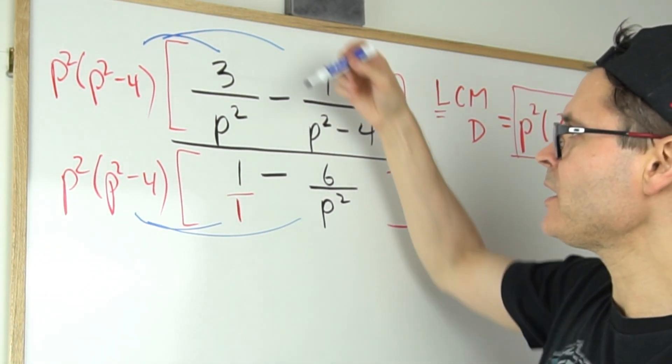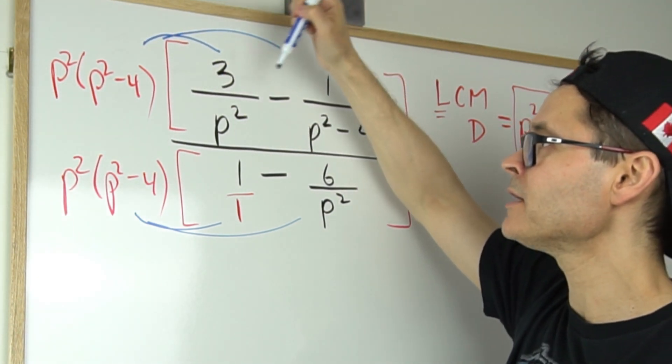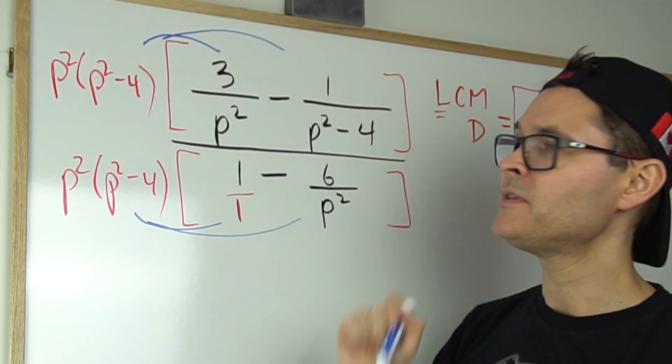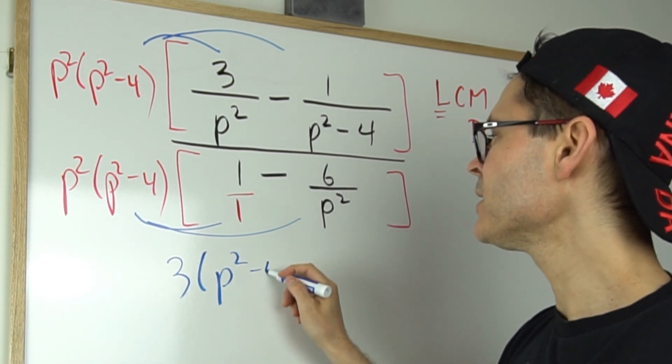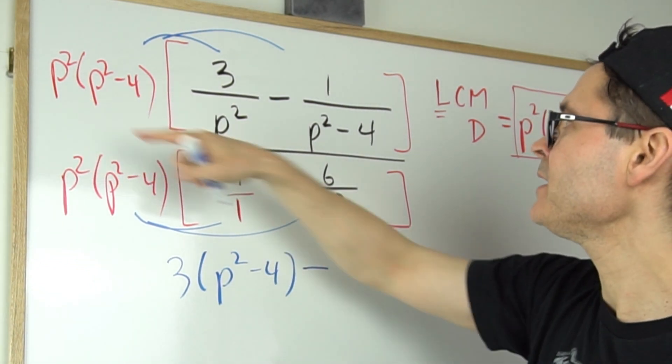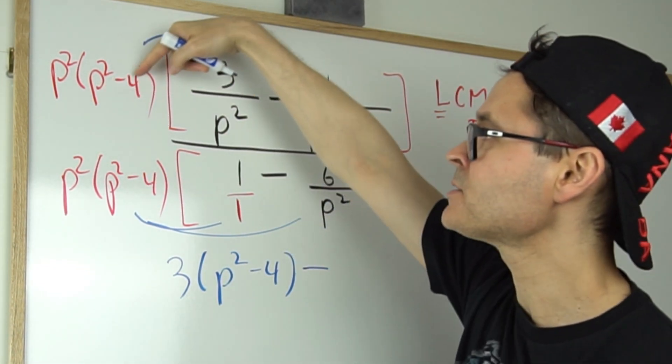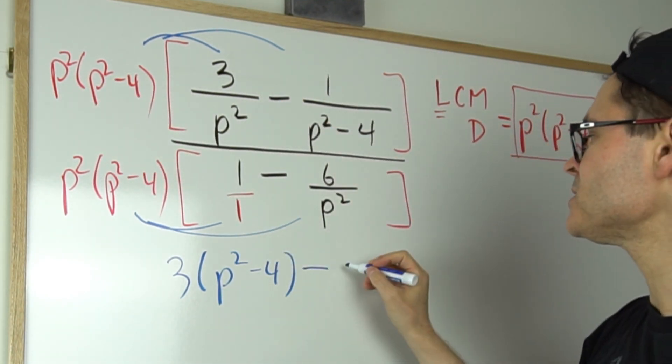If I multiply this by the first term, three over p squared, the p squared will cancel, leaving three times this difference of squares. So I'll get three times p squared minus four, and then minus—I'll multiply this by the second fraction in the numerator. Notice the p squared minus fours will cancel, leaving p squared. p squared times one is p squared.